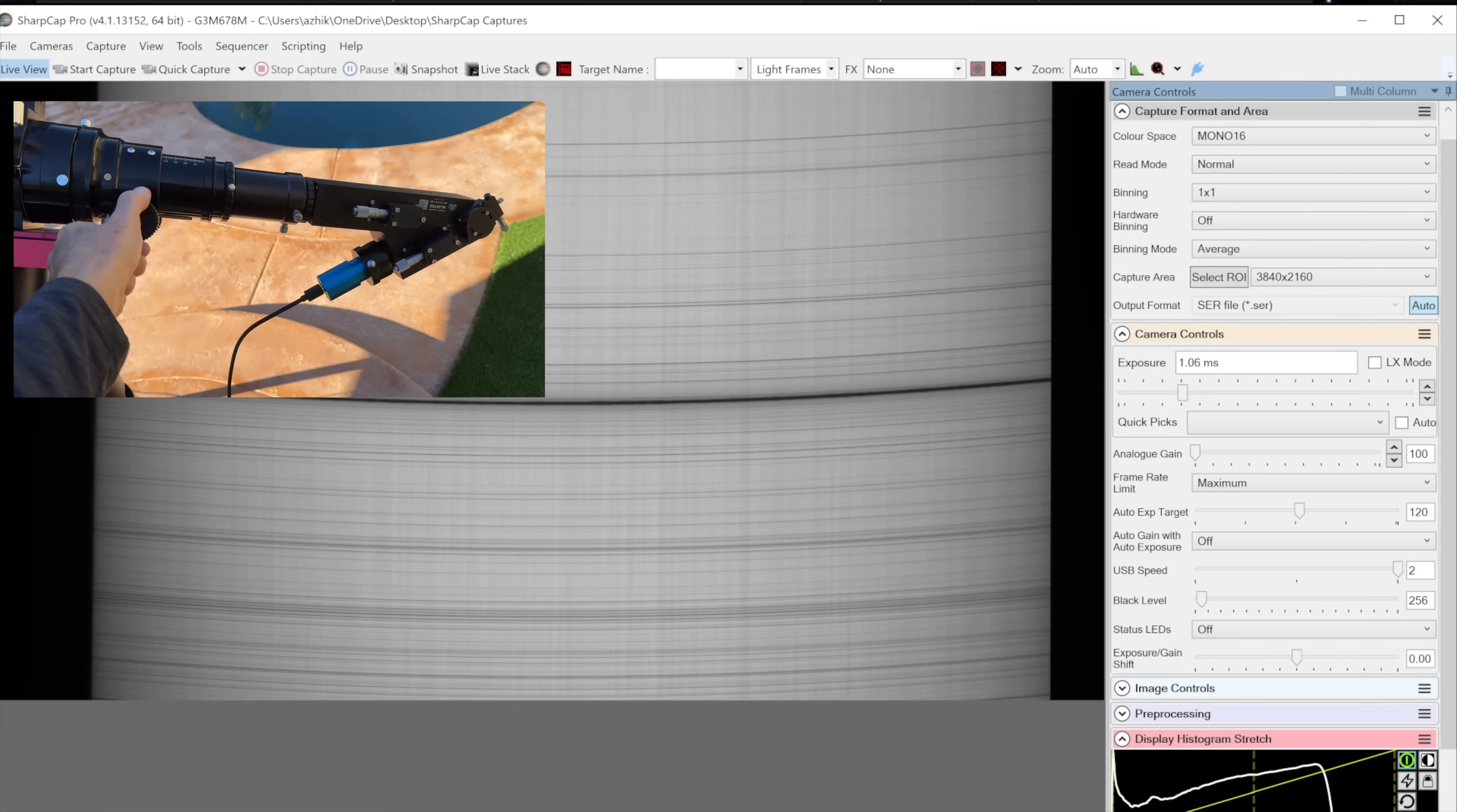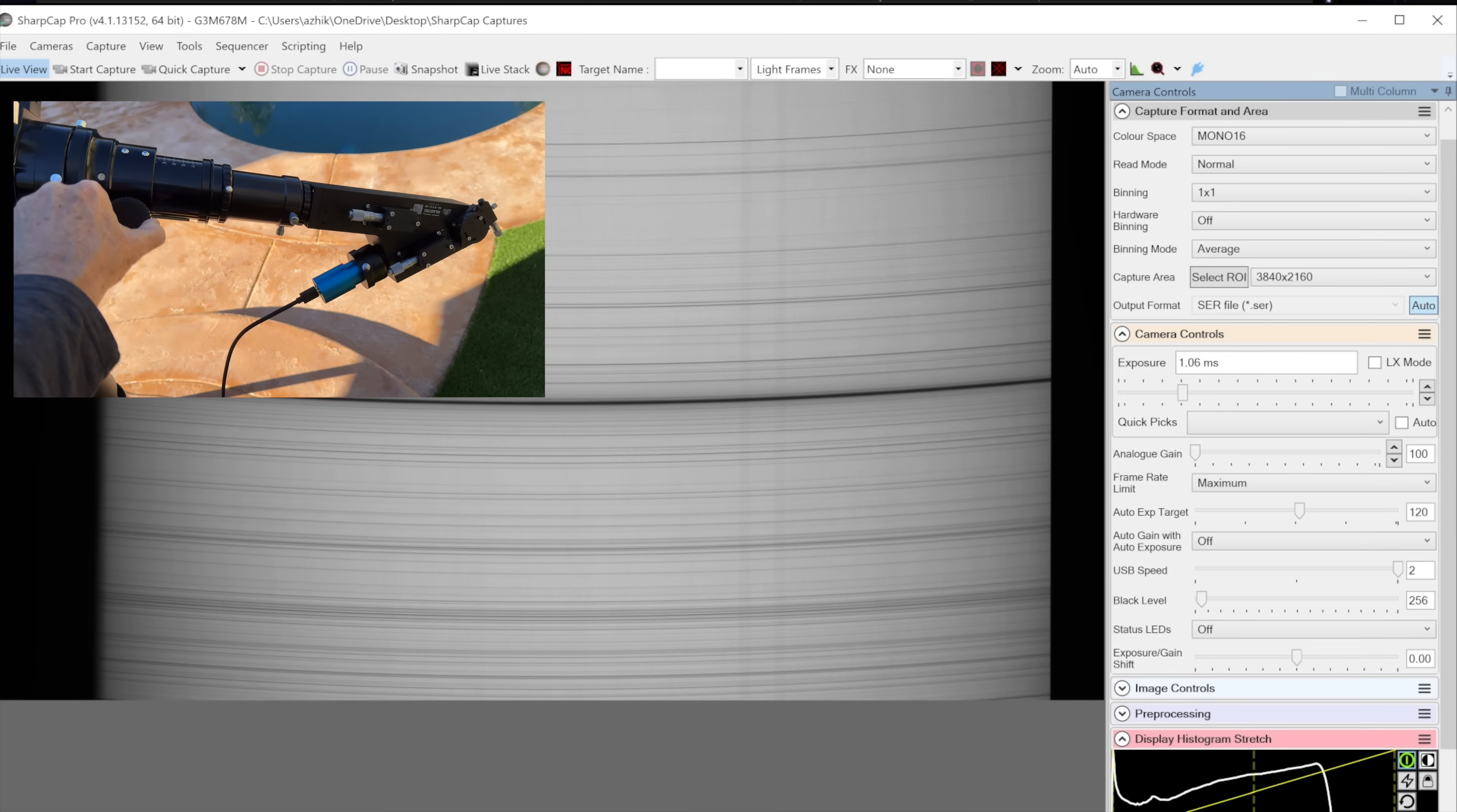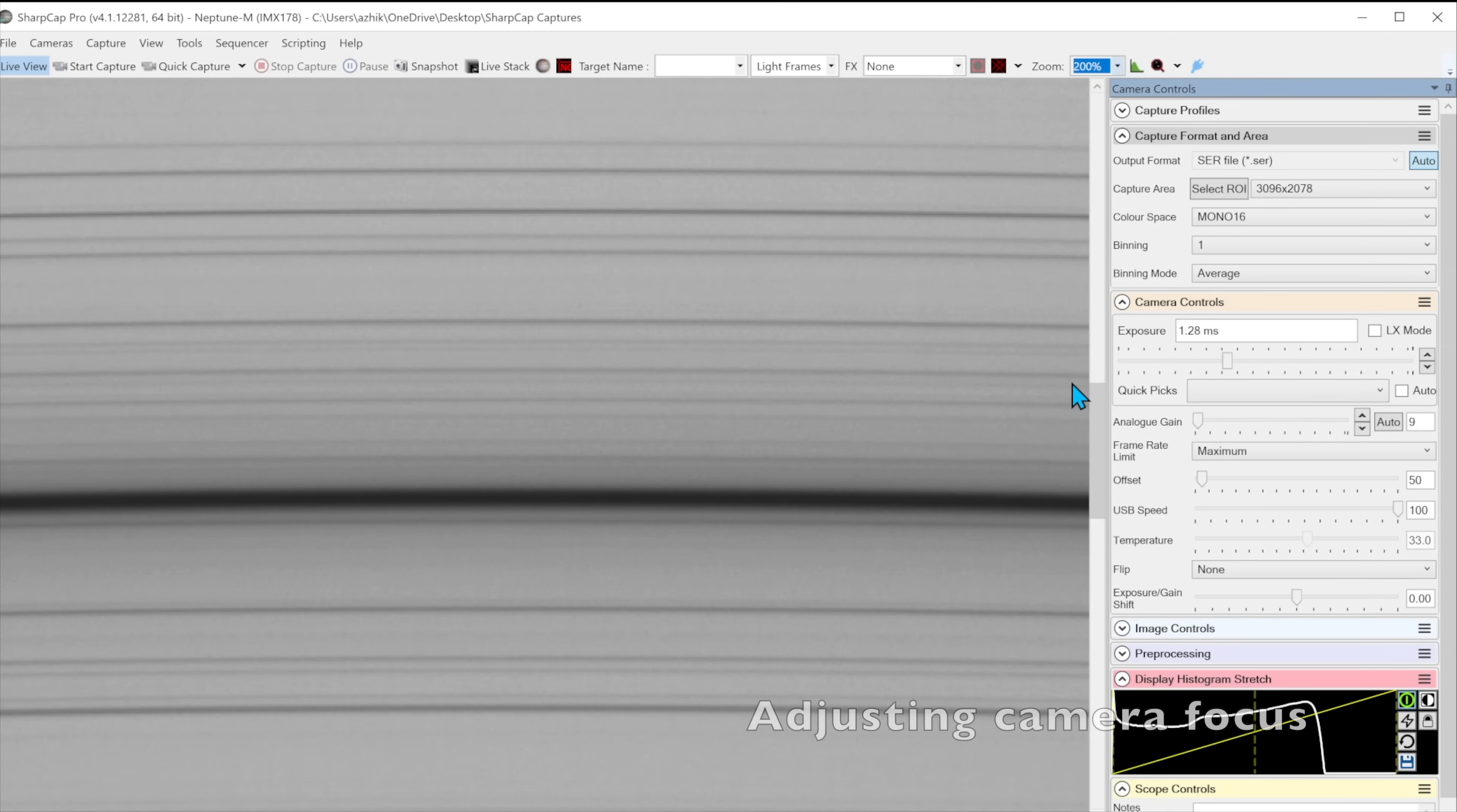I adjust the telescope focus by looking for maximum visibility of sharp, vertical scintillation lines. You then reiterate the camera and collimator and telescope focus fine adjustments until the final image is as good as possible.